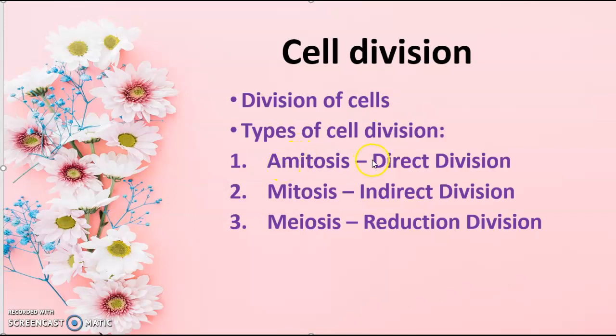One is amitosis, the second one is mitosis, and the third one is meiosis. Amitosis is otherwise called as direct division. Here the parent cell is directly divided into two daughter cells without undergoing a sequence of steps, so this process is called direct division.